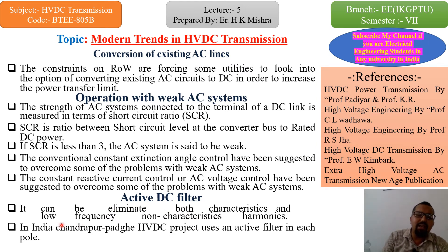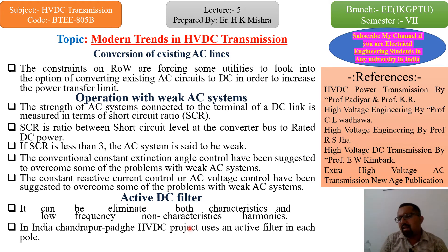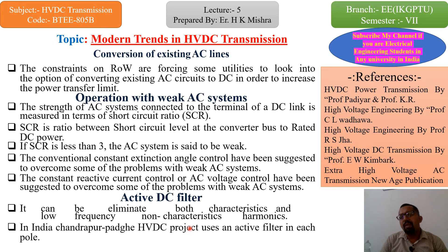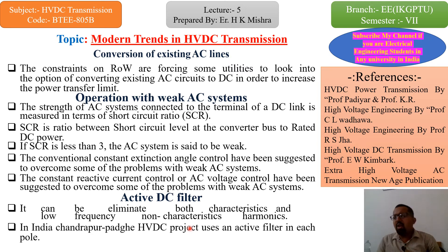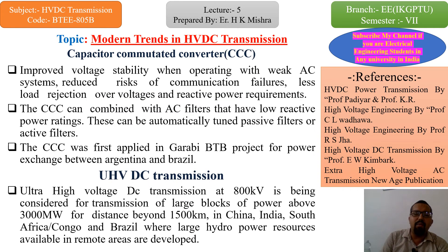Active DC filter क्या कहता है — it can eliminate both characteristics and low-frequency non-characteristic harmonics। जो DC filter है, HVDC का वो component है, उसको हम ऐसा design करें कि पूरे के पूरे characteristics and low-frequency non-characteristic harmonics को eliminate कर दे — यह modern trend में design करें। In India, the Chandrapur-Padghe HVDC project uses an active filter in each pole। जो हमारी already commissioned HVDC line है, उसके हर एक pole पे active filters लगाए हुए हैं to maintain power quality — किसी भी तरह के harmonics, distortions या power quality issues न आएं।